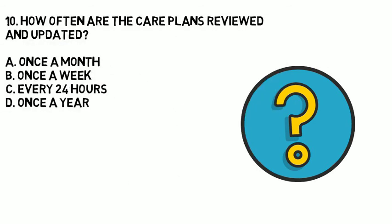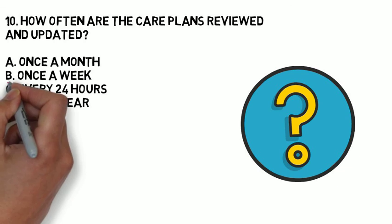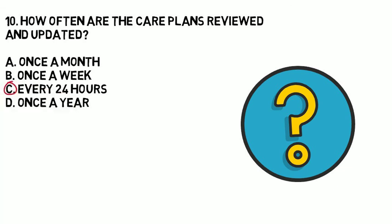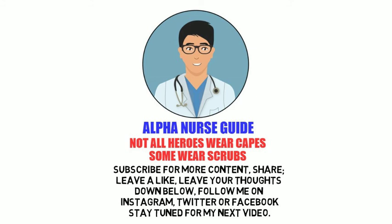Question 10: How often are care plans reviewed and updated? A. Once a month, B. Once a week, C. Every 24 hours, or D. Once a year? The correct answer is C — every 24 hours. You don't have to wait 24 hours though; if something changes in the condition of the patient, you can update the care plan right then and there. Normally, it's every 24 hours that the care plan is updated. That's all for this video. If you want the script, go to alphanurseguide.com and follow me on Twitter, Facebook, or Instagram. Till next time, ladies and gentlemen.